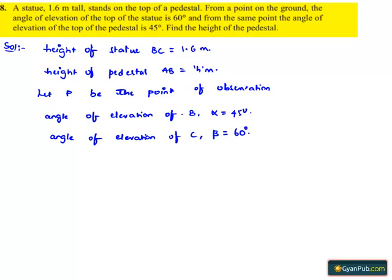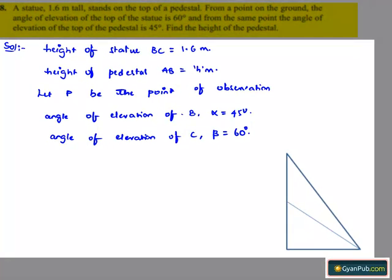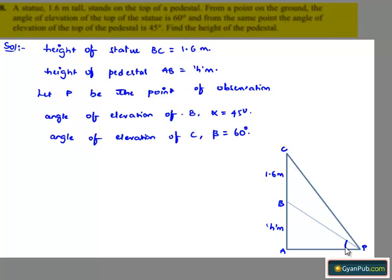Let us represent the above data in the form of a figure. In the figure, AB is the pedestal and BC is the statue on it, which is of height 1.6 meters. We assume AB to be H meters, and P is the point of observation. From P, the angle of elevation of the top of the pedestal is alpha and the top of the statue is beta.